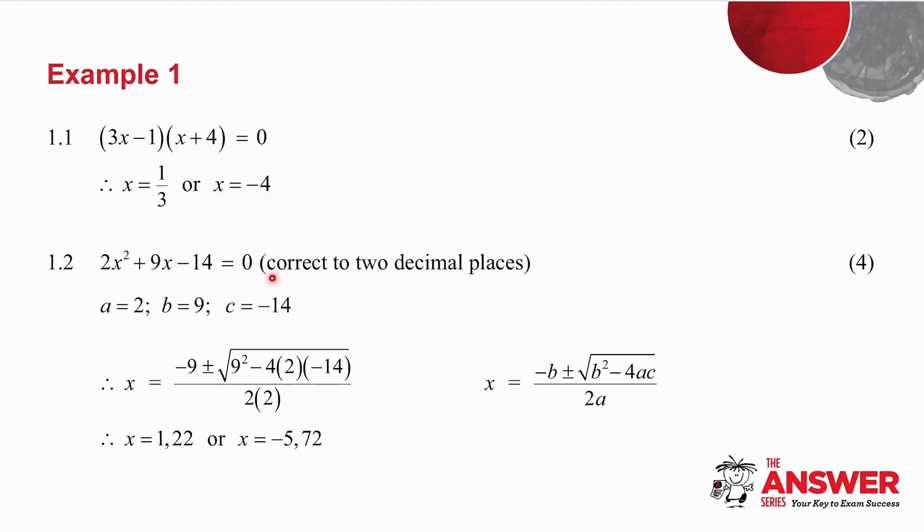Number 1.2, they've told you to solve correct to two decimal places, which means you need to use the quadratic formula. A is two, B is nine, C is minus 14. There's my quadratic formula. So substitute the values in, use your calculator, and you get your two answers.